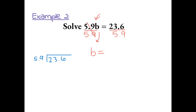When dividing decimals, we have to make the number on the outside a whole number, so we move the decimal over one place. Then we do the same to the number inside and carry up the decimal point. So now we divide 236 by 59. 59 goes into 236 four times, which equals 236. So b equals 4.